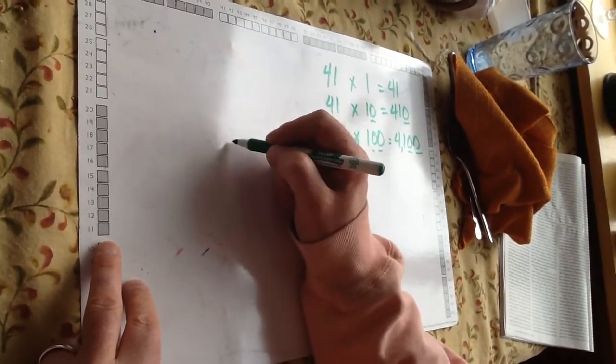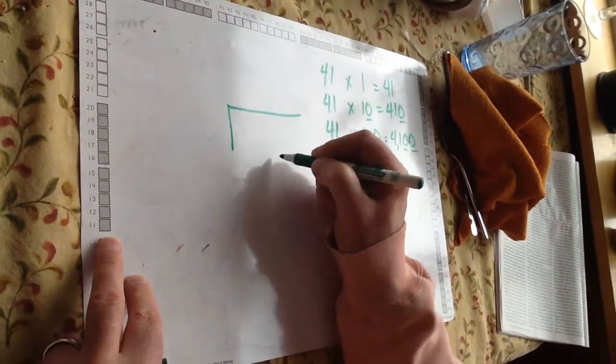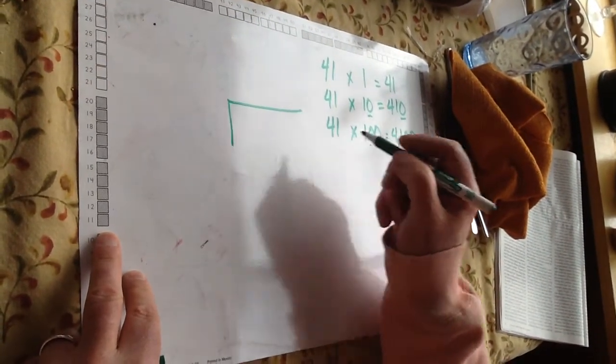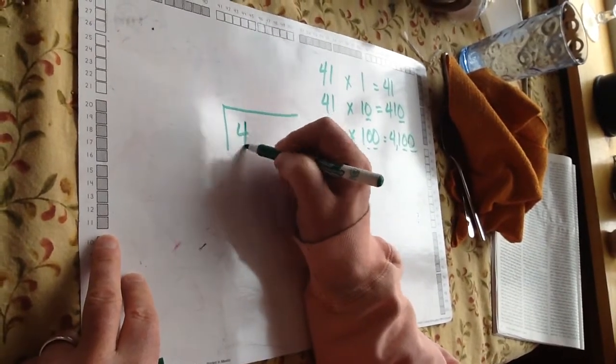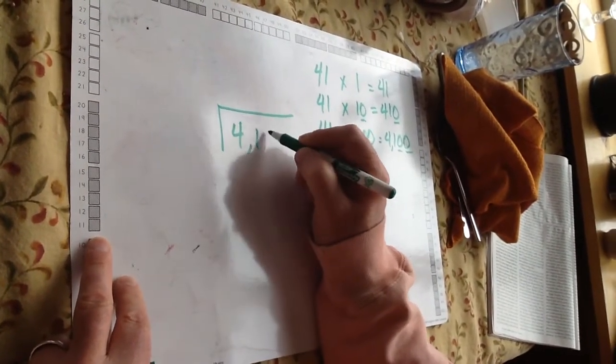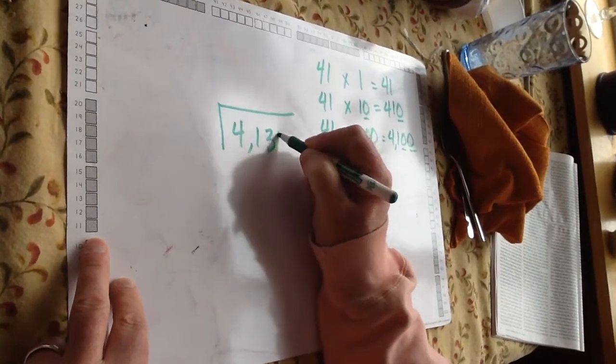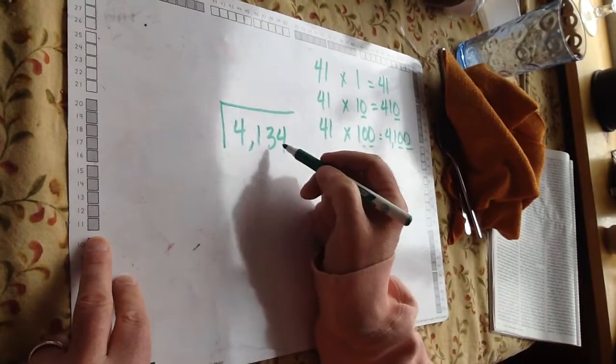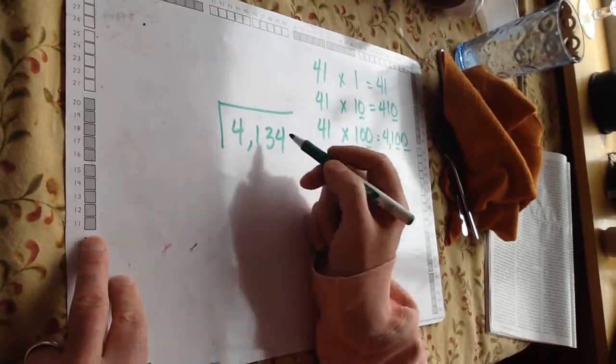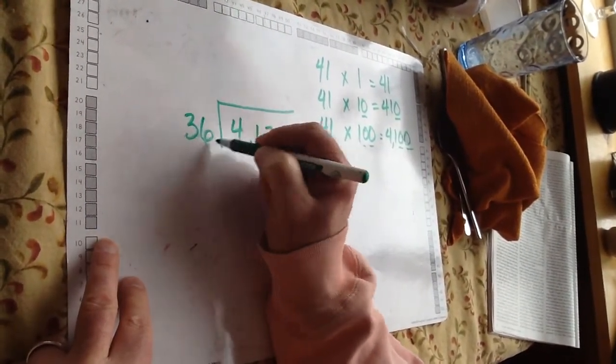Remember that the number inside a box is the number being divided. So let's say we're going to have 4,134, big number, and we're going to divide that by a two-digit number, like 36.